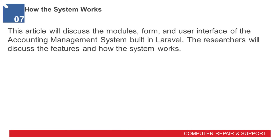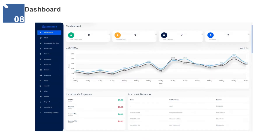This article will discuss the modules, forms, and user interface of the accounting management system built in Laravel. The researchers will discuss the features and how the system works. Dashboard — this serves as the main page of the system administrators. This dashboard displays major records of the company's accounting.